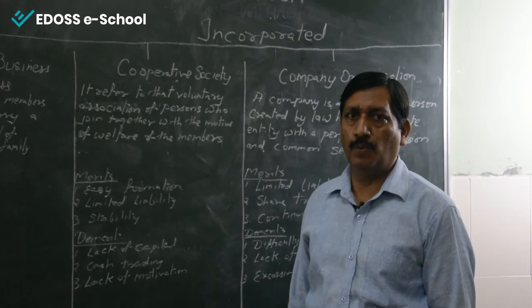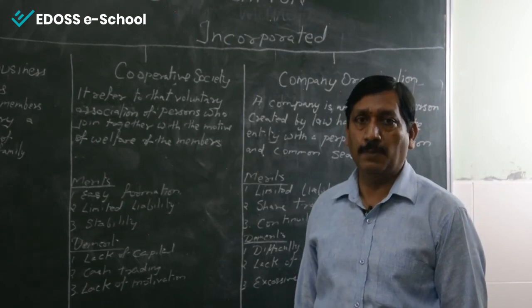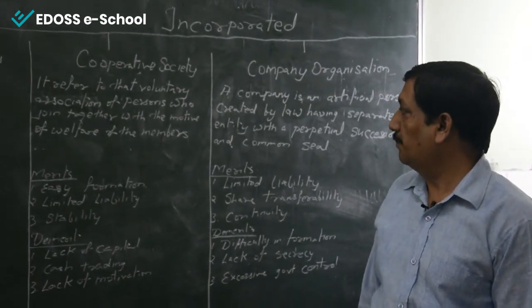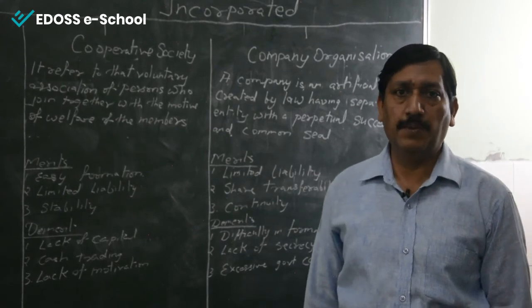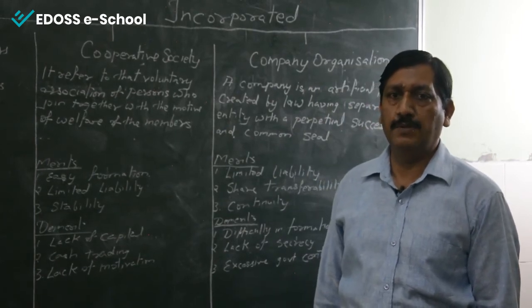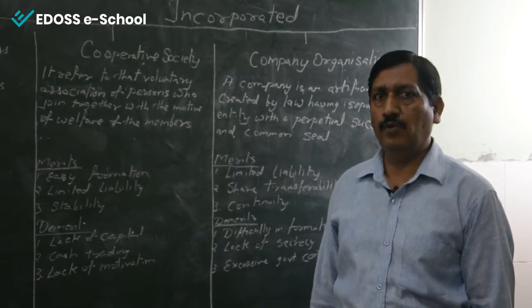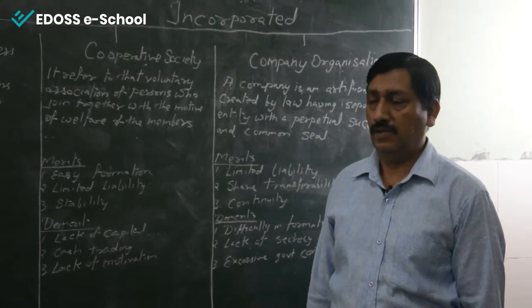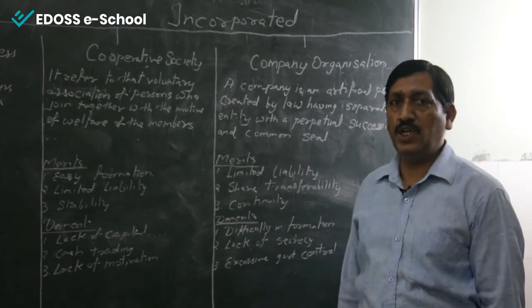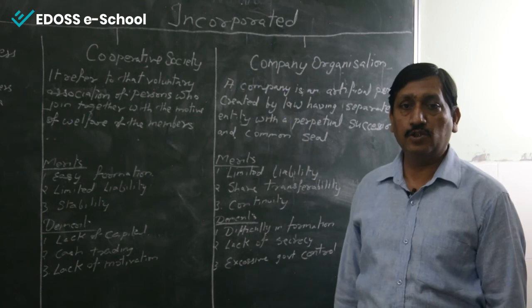The last form is company organization. A minimum of seven members are required to form a company, and there is no maximum limit. A company is an artificial person created by law, having a separate legal entity, a common seal, and perpetual existence — meaning if any person dies, retires, or leaves, the company continues and is not closed unless it fails to fulfill the law. Merit: Limited liability — your liability is only as much as the money you have invested.